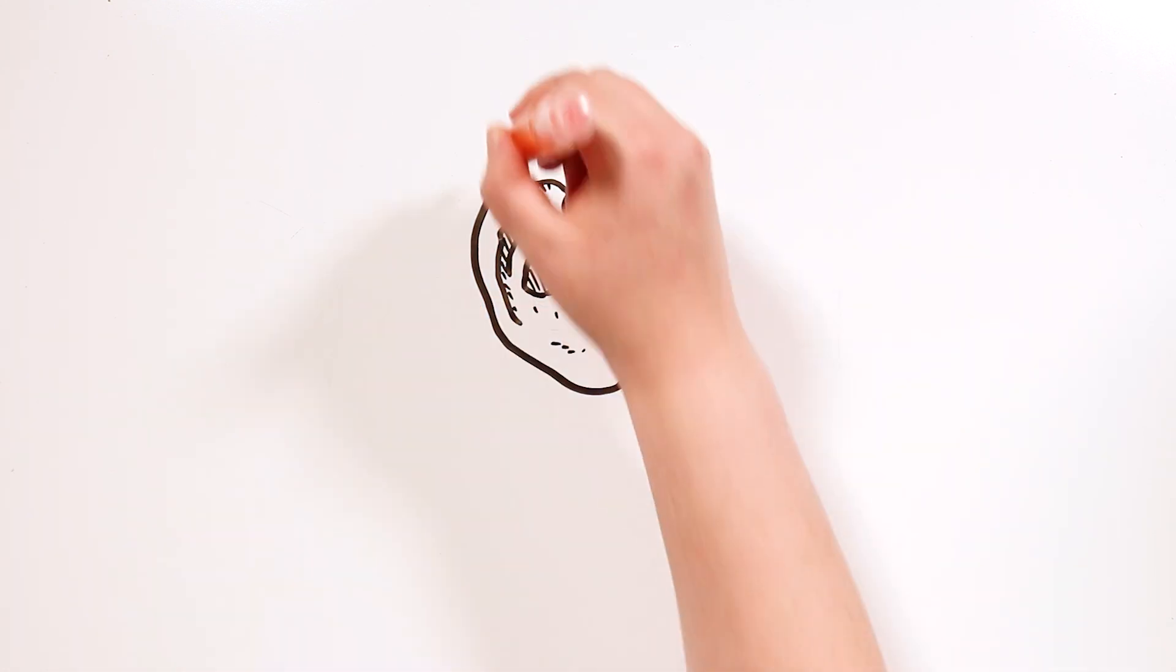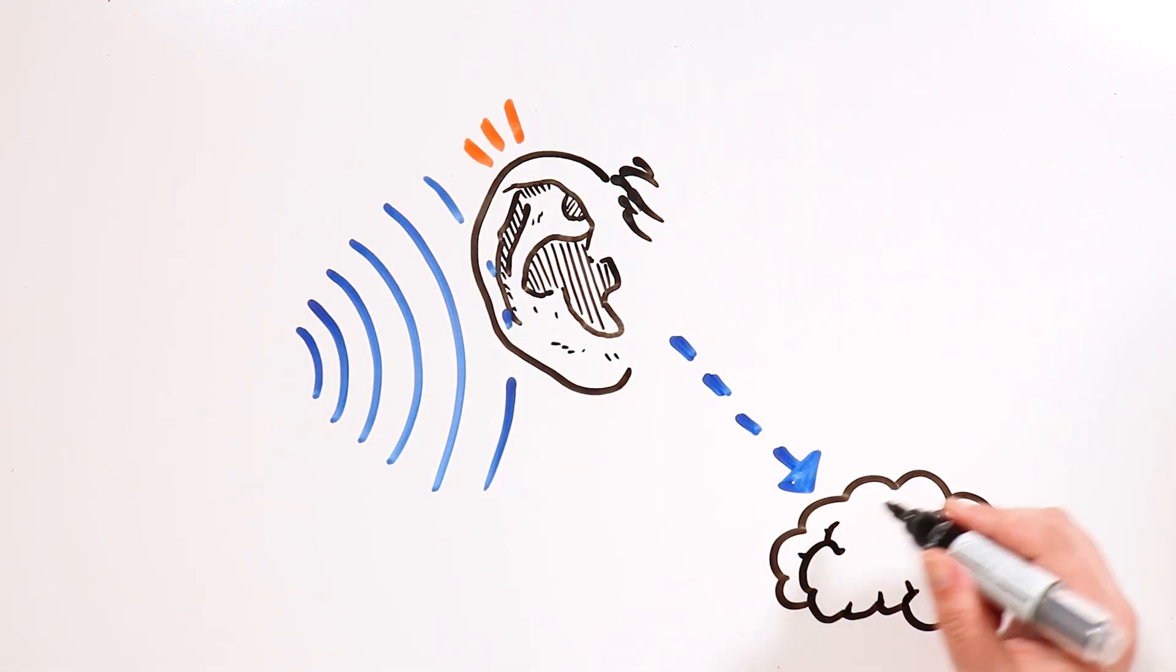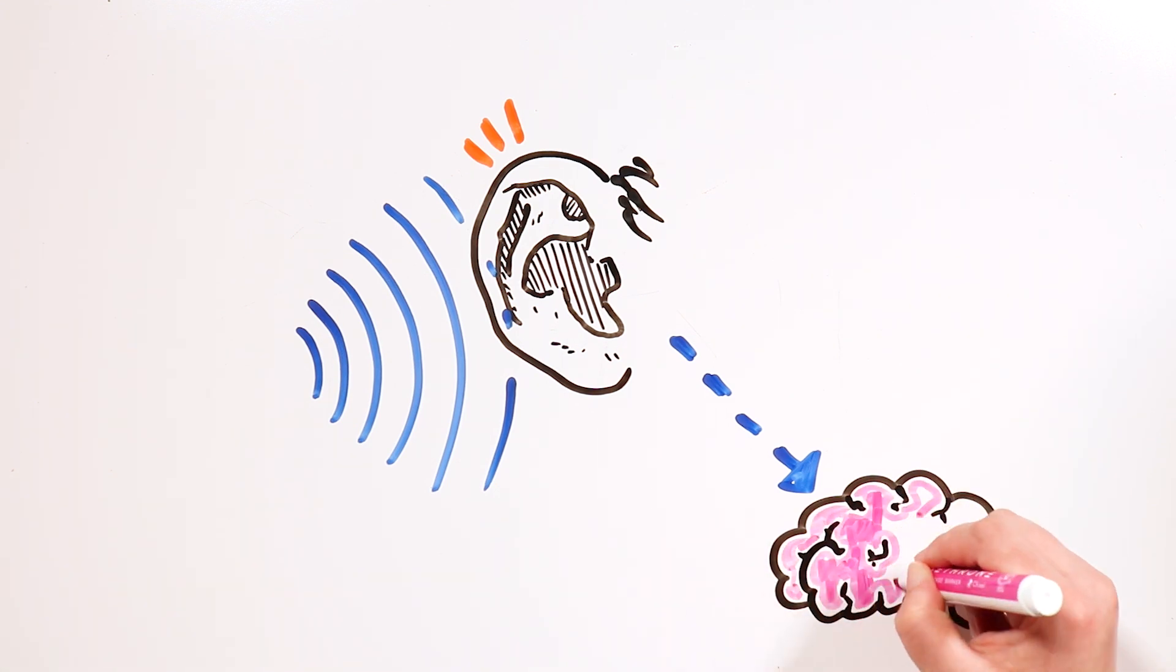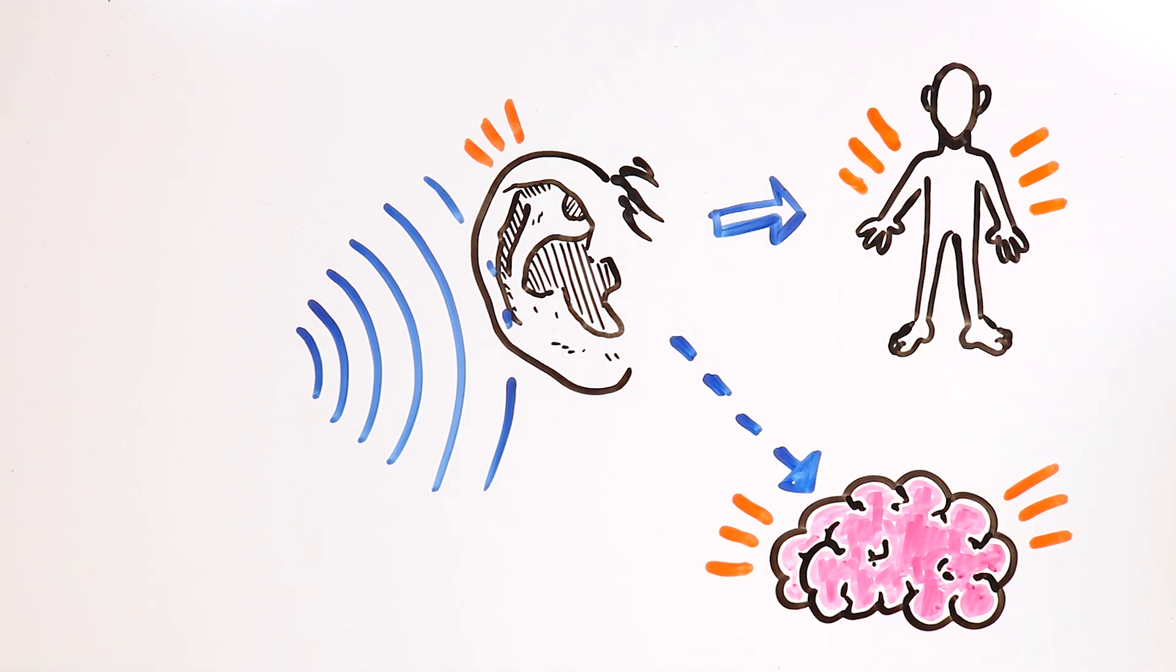The ear is a pretty complex organ. It perceives the sound waves around us, and then transmits that information to the brain so that we can successfully navigate and interact with our surroundings. And not only that, but our ears are also fundamental for us to keep our balance. Curious, isn't it?